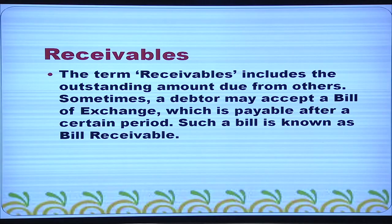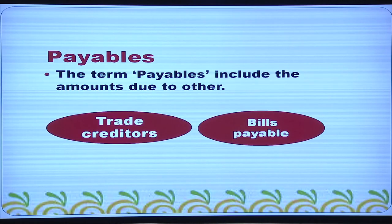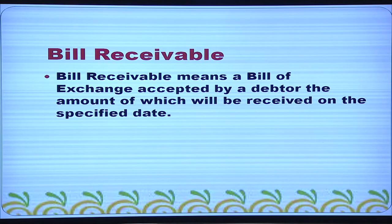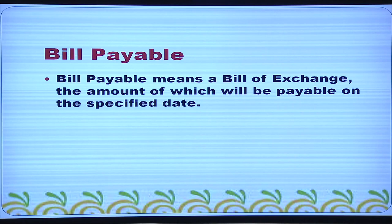Receivables include the outstanding amount due from others. Sometimes a debtor may accept a bill of exchange, payable after a certain period — such a bill is known as bills receivable. The term payables includes amounts due to others; trade creditors and bills payable are examples. Bills receivable means a bill of exchange accepted by a debtor, the amount of which will be received on a specific date. Bills payable means a bill of exchange the amount of which will be payable on the specified date.